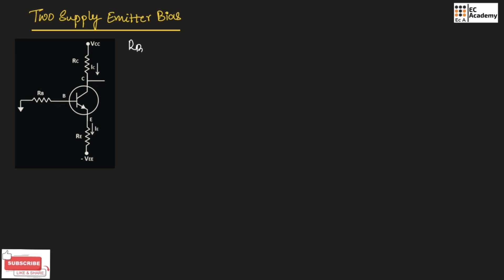Here, the value of Rb will be very small. Since the value of Rb is very small, we can say Vb will be approximately equal to 0 volts. So the voltage across the base terminal will be approximately equal to 0 since Rb is very small.